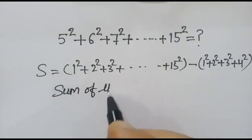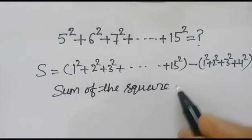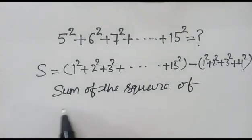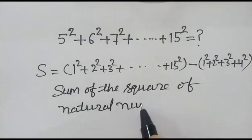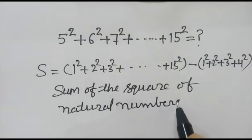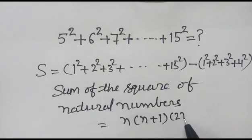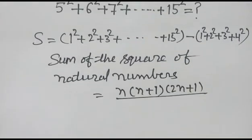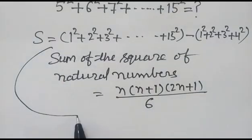As we know, the sum of the square of natural numbers is equal to n times (n plus 1) times (2n plus 1) over 6.